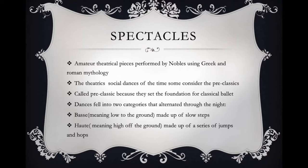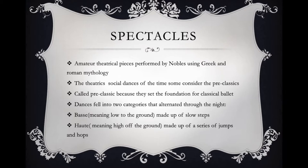The Spectacle era consisted of amateur theatrical events held by nobles using Greek and Roman mythology. These theatrics used social dance and are considered the pre-classics. Dances fell into two categories: the base, which was slow steps, and the haute, which was jumps and hops. The base allowed older women to make their entrance, while the faster rhythms allowed younger women to show agility and lightness.